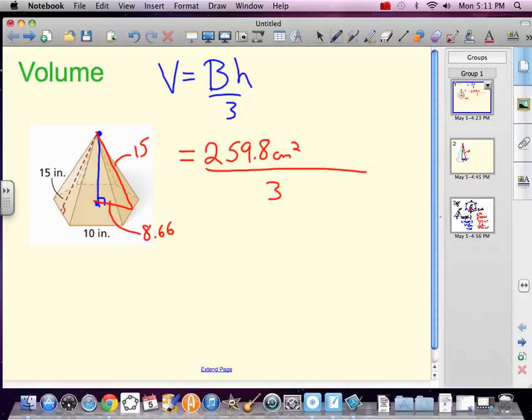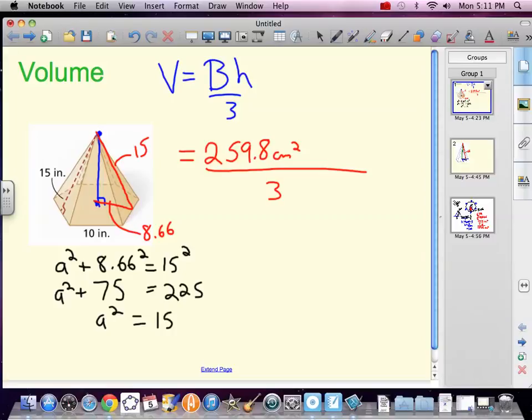We can find that blue line by Pythagorean theorem. a² + b² = c². I'm going to call the blue line a. So a² + 8.66² equals 15². Be careful: 15 is the slanted part, it is the hypotenuse. So 225, we've got 8.66 squared is 74.99, which is pretty much 75. a² equals 225 minus 75, 150. So I need square root of 150: 12.25. Awesome, we just found the blue line.